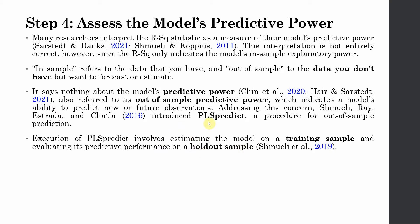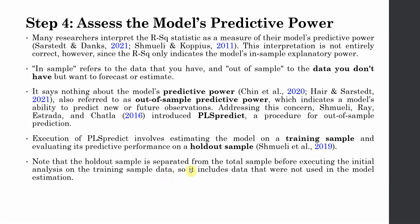In simple terms, what happens in PLS-Predict analysis is that your overall sample is divided into two sub-samples: one is the training sample and the other is the hold-out sample. The predictive performance is evaluated on the hold-out sample based on the training sample. The hold-out sample is separated from the total sample before executing the initial analysis, and includes data that were not used in model estimation. The estimation is based on your training sample, which is then used to predict the outcome in the hold-out sample.